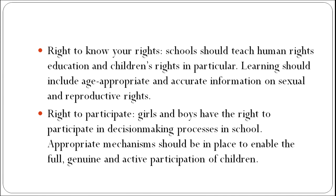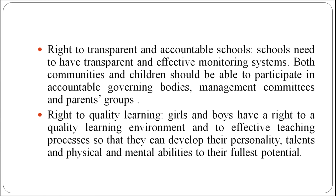Right to know your rights: schools should teach human rights education and children's rights in particular. Learning should include age-appropriate and accurate information on sexual and reproductive rights. Right to participation: girls and boys have the right to participate in decision-making processes in school, and appropriate mechanisms should be in place to enable the full, genuine and active participation of children. Right to transparent and accountable schools: schools need to have transparent and effective monitoring systems, and both communities and children should be able to participate in accountable governing bodies, management capacities and parent groups.